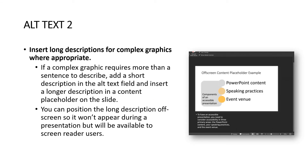For complex graphics that require more than a sentence to describe, add a short description in the alt text field and insert a long description in a content placeholder on the slide. For example, if you have a pie chart with three slices and statistics, you could add a column on the slide listing '43% men, 33% women, 4% non-binary' so the screen reader can describe the graph. You can also position the long description off-screen so it won't appear during a presentation but will be available to screen reader users.